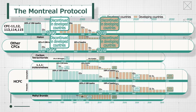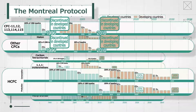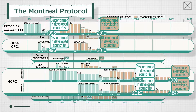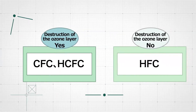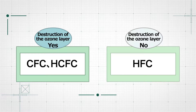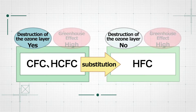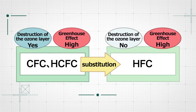Production of HCFC will be abolished by 2020 in developed countries and by 2030 in developing countries. As a result of these efforts, HFC, which is fluorocarbon without an ozone depletion effect, became widely used as an alternative to CFC and HCFC. However, HFC has a high greenhouse effect.